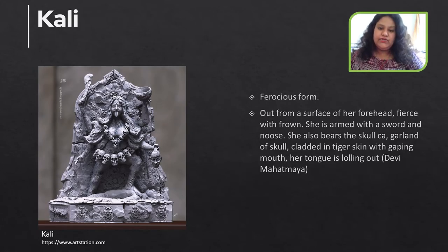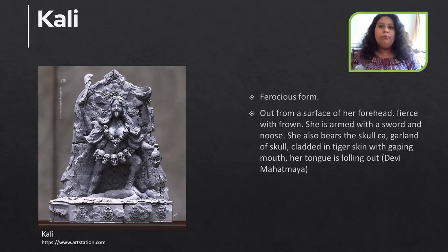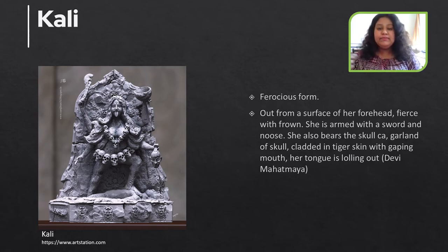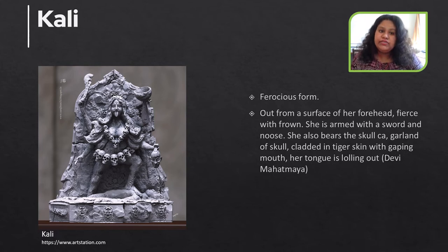The next goddess is Kali. Kali is always depicted in a ferocious form and she is a ferocious goddess herself. She came out of a mythological story. There was a demon named Raktabija, and whenever anyone tried to kill Raktabija, wherever a drop of his blood fell, a hundred Raktabijas would emerge. So the gods were not able to defeat the demon Raktabija. In that case, Devi, with her own powers, created another attribute out of herself — the ferocious form which is Kali.